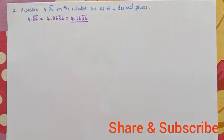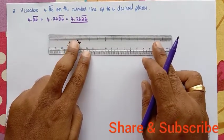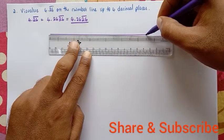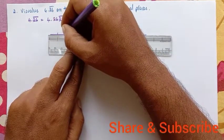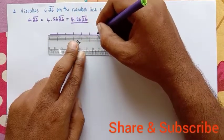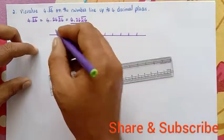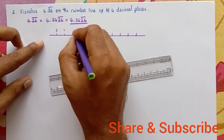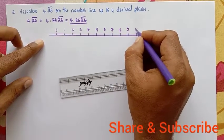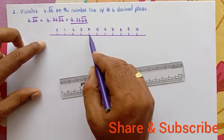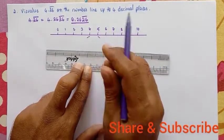So first, what we want to do is draw a number line and cut it into 10 equal parts from 0 to 10. Now, after 4, the value 4.2 exists after this point. I will cut this part and magnify it.